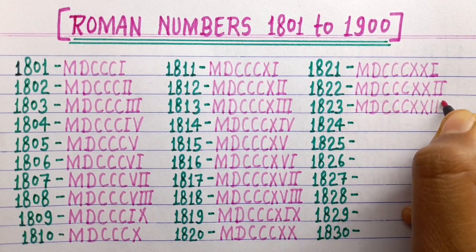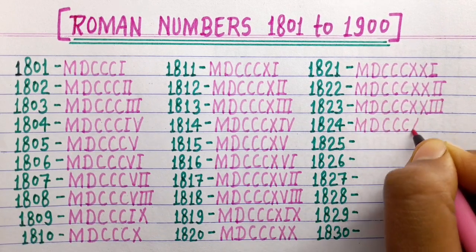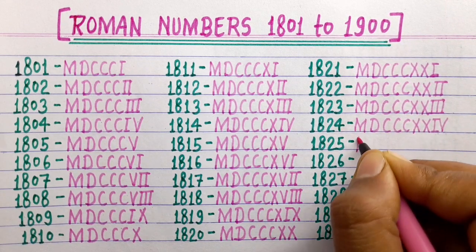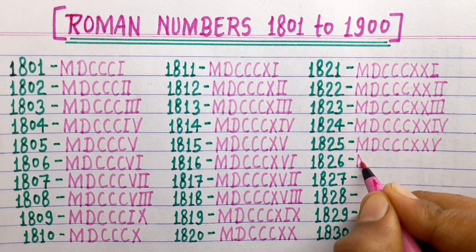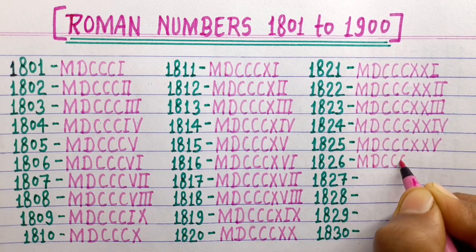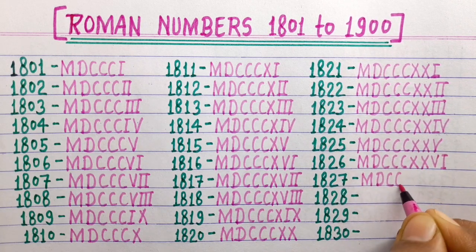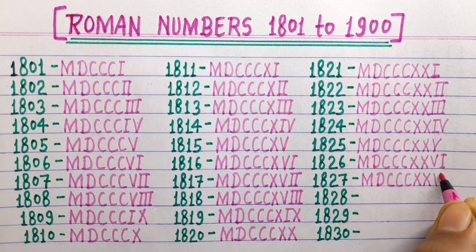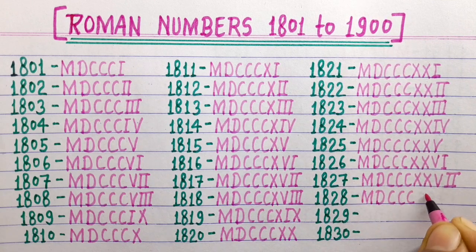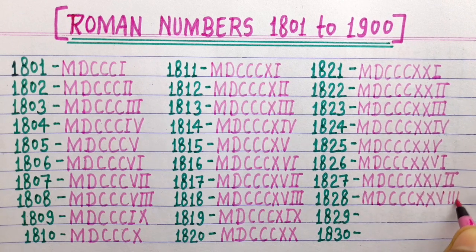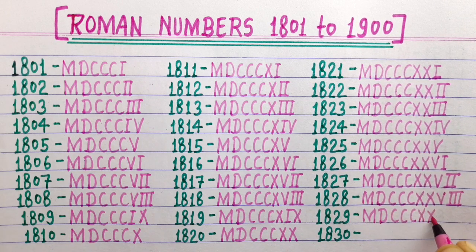1823 MDCCCCXXIII, 1824 MDCCCCXXIV, 1825 MDCCCCXXVI, 1826 MDCCCCXXVI, 1828 MDCCCCXXVI, 1829 MDCCCCXXIX.